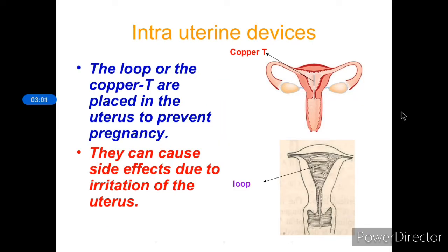The third method is intrauterine devices (IUDs). Devices like the loop or copper T are used — the copper T is T-shaped, as you can see, and is used to block the tube. The loop or copper T are placed in the uterus to prevent pregnancy. They can cause side effects due to irritation, as placing a device inside the uterus may cause irritation of the uterus.